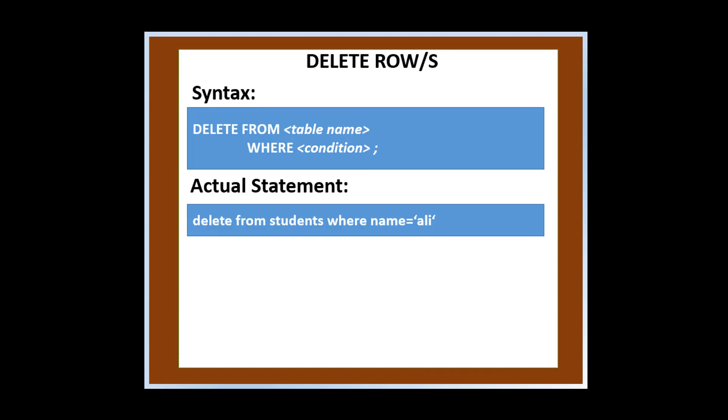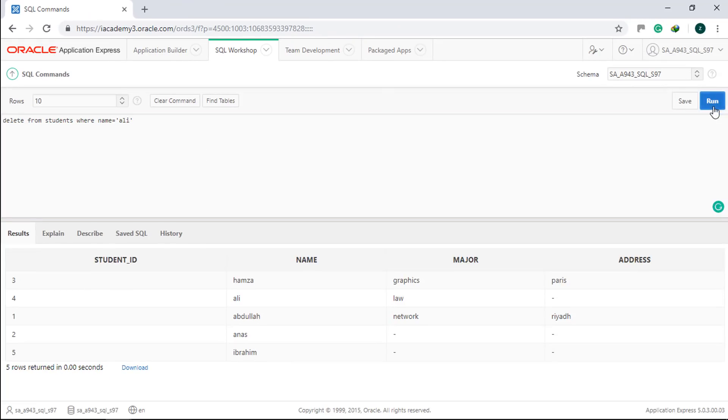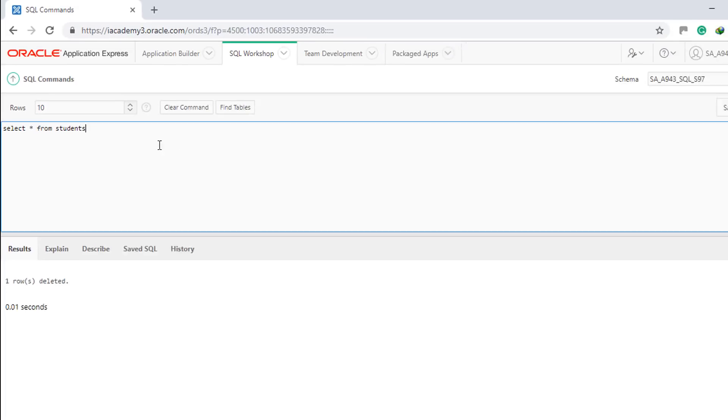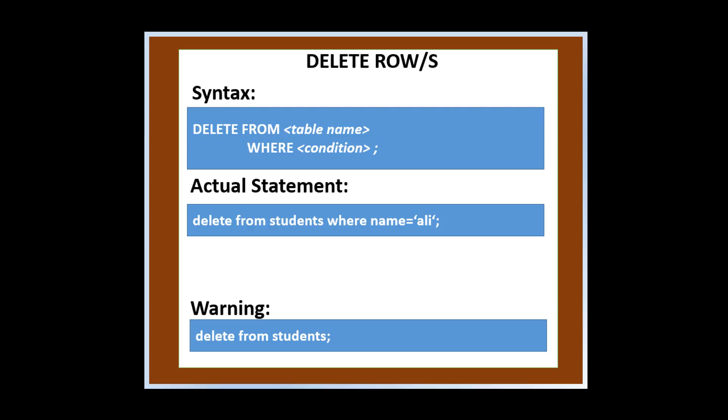Here is the syntax for deleting row or rows. This will delete all rows whose name is Ali. Run it. Click clear. Select star from students. Run it. Warning. Why is this statement dangerous? Because it will delete all the rows.